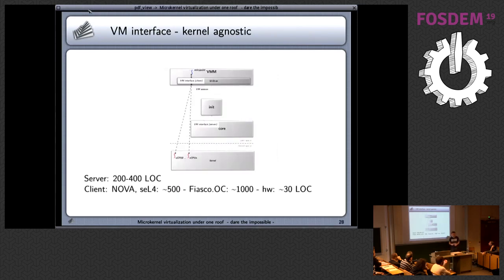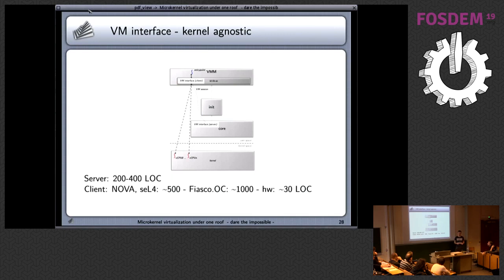Just to give you an idea of scale: on the service side, just to get your virtual machine running, we need something like 200 to 500 lines of code. On the client side, for Nova and seL4, we need something like 500 lines, mainly for copying vCPU state forth and back. For Fiasco OC it's double the amount, mainly because you have to handle Intel and AMD separately and can't abstract it away nicely. For our own kernel, it's actually just a pass-through wrapper — we don't implement anything currently.